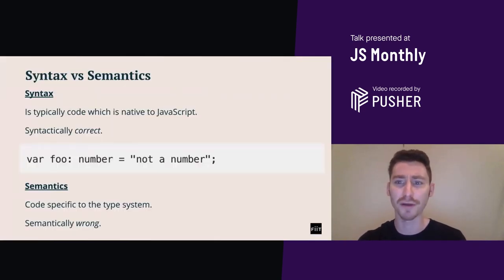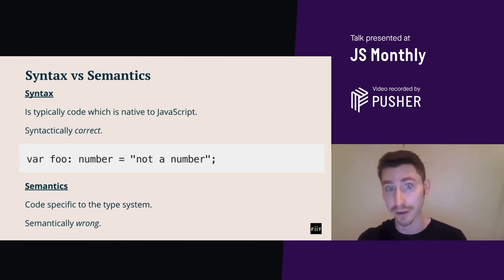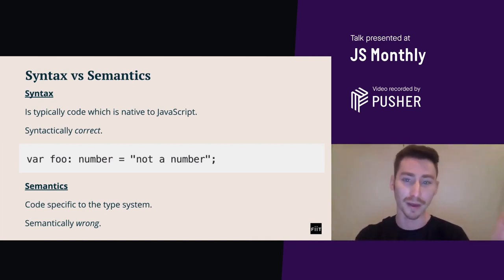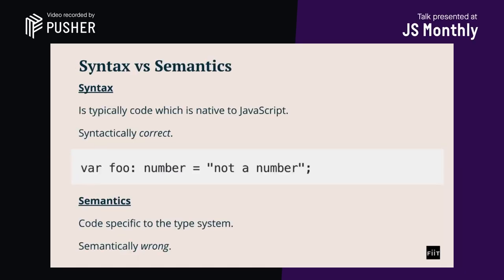Something important to cover early is the difference between syntax and semantics. Syntax is typically code which is native to JavaScript — you're essentially asking if the given code is correct for the JavaScript runtime. For example, code below might be syntactically correct, although ignoring the type. Then there's semantics — this is code specific to the type system, essentially asking if the given types attached to the code are correct. For example, code could be syntactically correct but semantically wrong, as we're defining a variable as a number but setting it as a string.